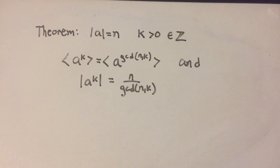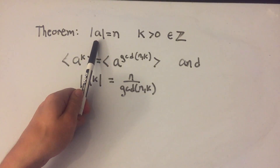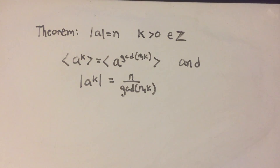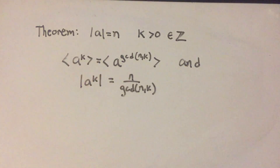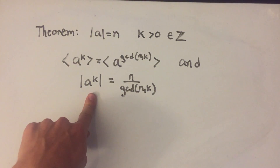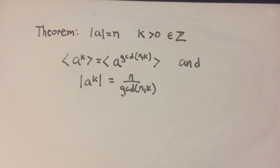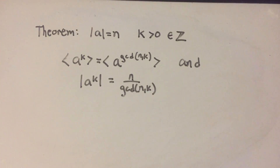This theorem says: take any element A whose order is n in your group — that just means A to the n power equals the identity — and take a positive integer k. The theorem states that the group generated by A to the k equals the group generated by A to the greatest common divisor of n and k, and also the order of A to the k equals n divided by the GCD of n and k. It's hard to understand exactly what the theorem states, let alone prove it, but hopefully going through this slowly we'll figure it all out.